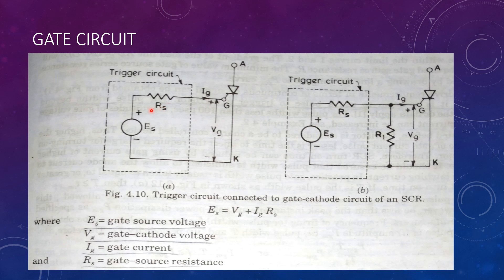The value of source resistance RS must be such that the gate current IG equal to ES upon RS must not damage the source ES as well as the gate circuit.